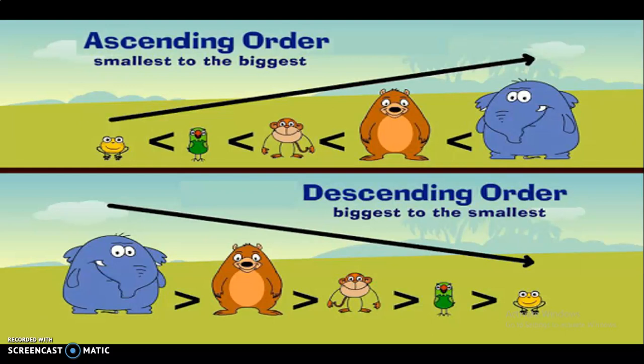Let's revise one more time. Ascending order means smallest to the biggest. Descending order means biggest to the smallest.